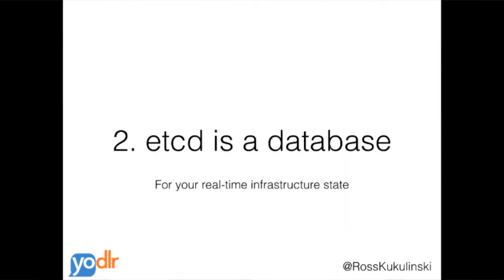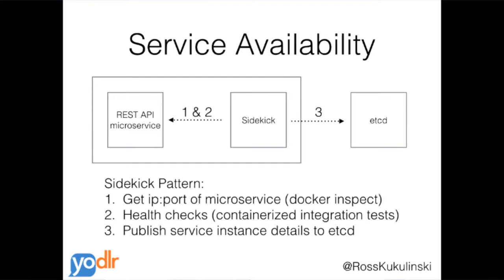Number two: etcd is a database, and you can put your real-time infrastructure state into it. By doing so, you can do things like service discovery. On the left-hand side, we've got a REST API microservice — Go, Node.js, Ruby, whatever you want it to be. The question is, how do you get traffic from that Docker container to other services? We use what's called the sidekick pattern, where a sidekick process runs as another systemd/fleet unit tied to the same machine as your microservice.